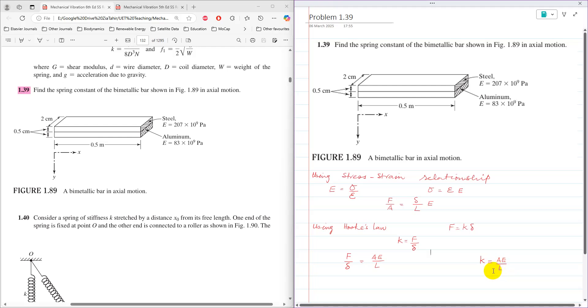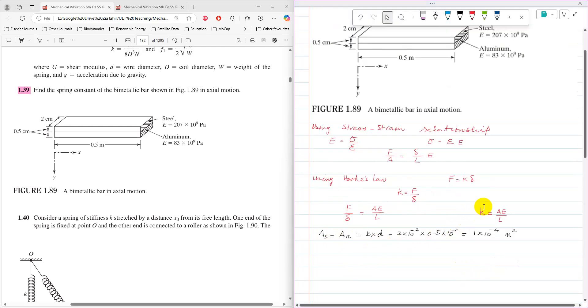This gives us the spring stiffness for each bar. To find the spring stiffness, the cross-sectional area is required. The area of both strips is the same because the depth of each strip is 0.5 cm and the width is 2 cm.